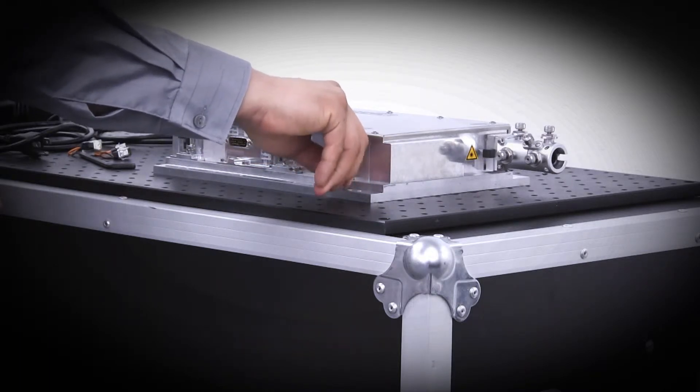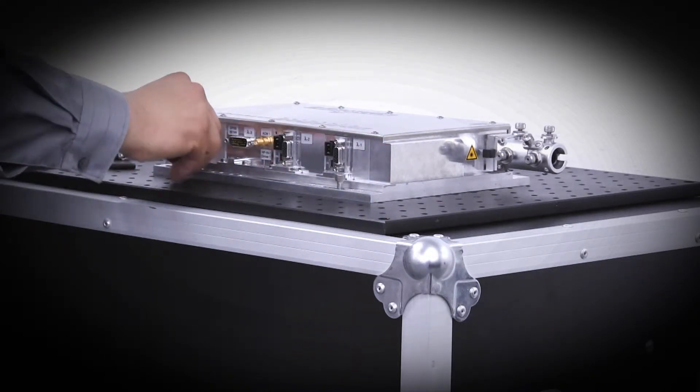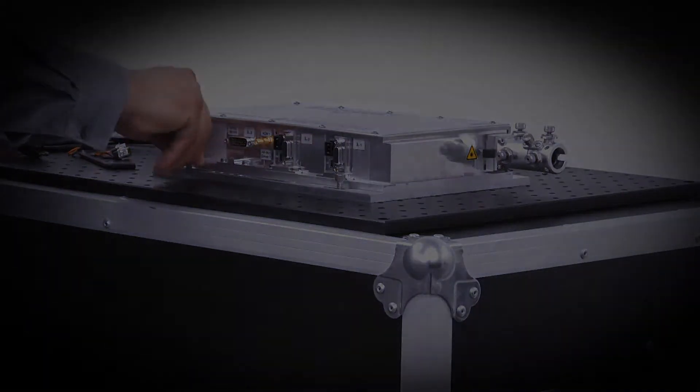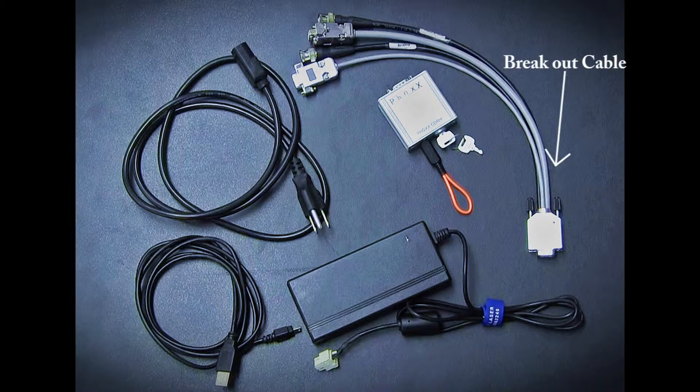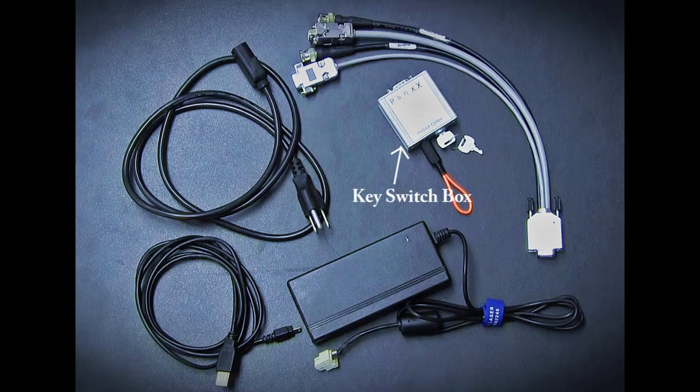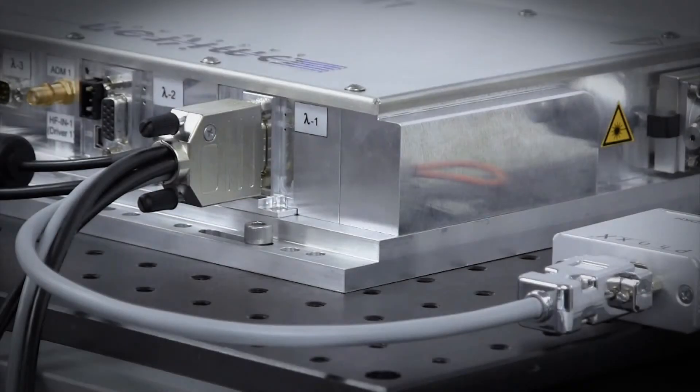Each diode laser module in the system requires the following parts to be connected to the back of the laser: a power supply, a USB cable, a breakout cable, and a key switch box. The breakout cable and the key switch box are connected together and are secured to the back of the Light Hub on each laser. The USB cable and the power supply are also connected to the back of the Light Hub on each laser.